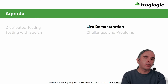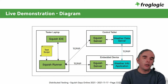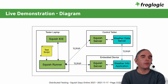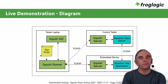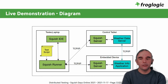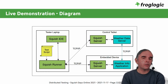That's a quick introduction to this topic. We'll now look at a live demonstration. There will be a simple weather application that reads weather data from a weather service provider. The weather application will be running on the embedded device, while the application that provides data for the weather service will be running on a control tablet. On the tester side, we will be running Squish Runner and Squish IDE on my laptop, which will communicate with a Squish Server on the control tablet and another Squish Server on the embedded device.